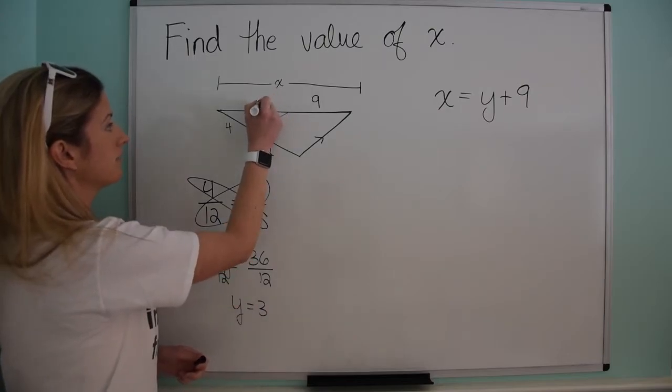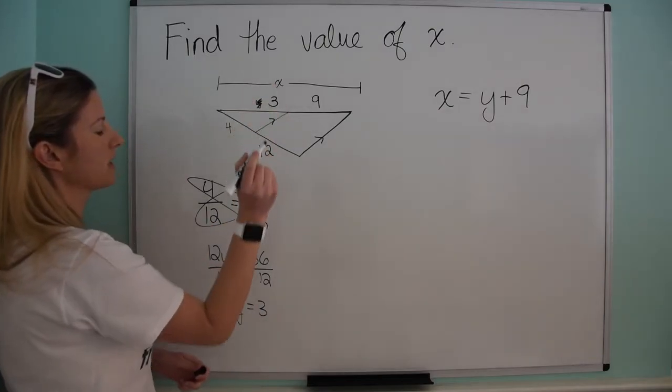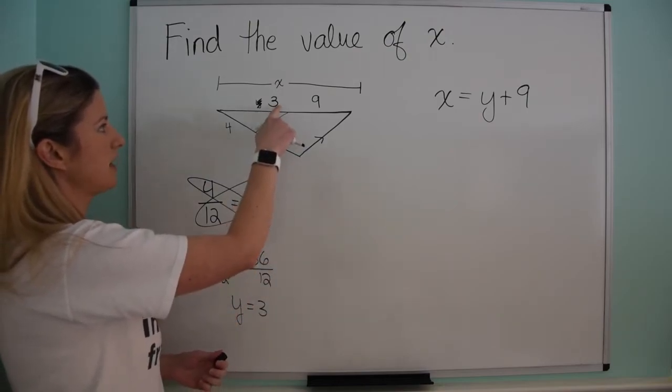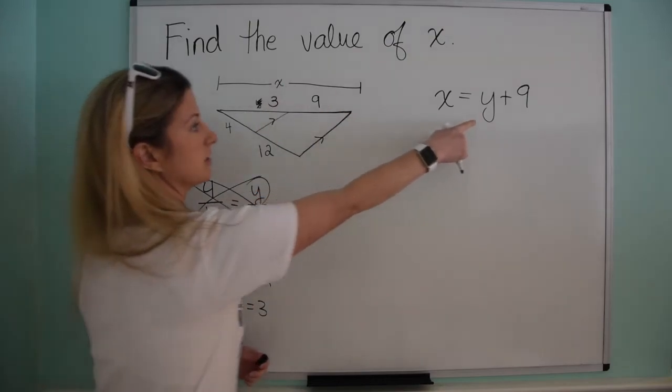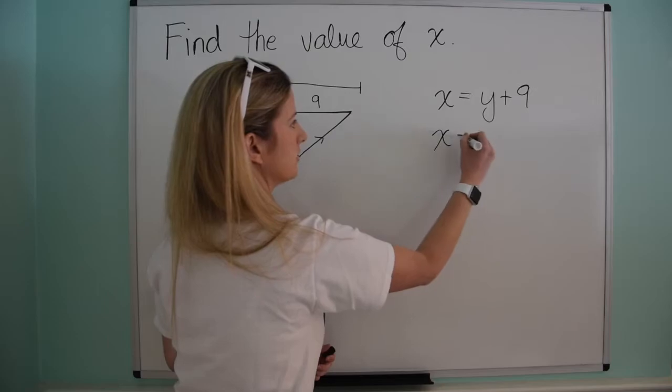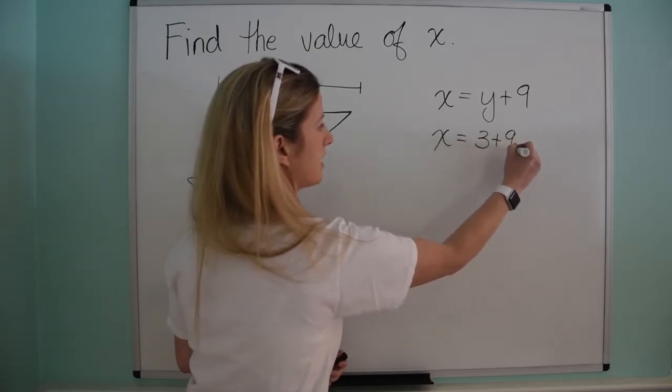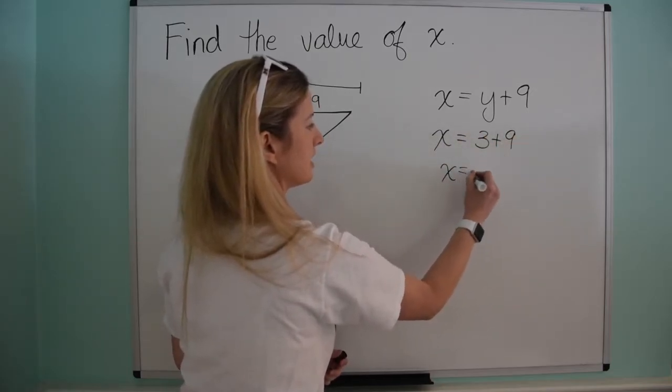So then I can plug it in up here, so instead of having y, I'll write it as 3. So now I know that x is just going to be y plus 9, so in that case it's going to be 3 plus 9, so then I know that x equals 12.